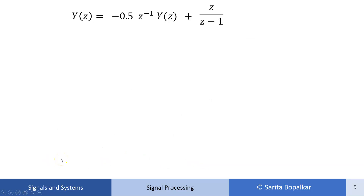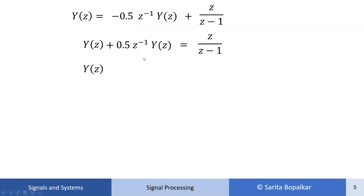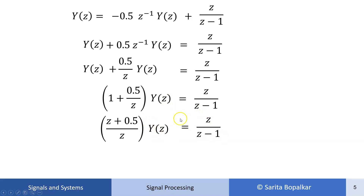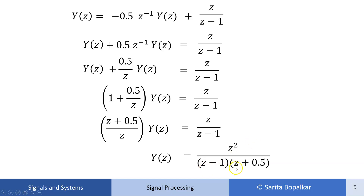Now combine the Y(z) terms. Take the -0.5·z⁻¹·Y(z) term to the left side and take Y(z) common: Y(z)·(1 + 0.5/z) = z/(z-1). This gives Y(z)·(z+0.5)/z = z/(z-1), and solving: Y(z) = z²/[(z-1)·(z+0.5)].